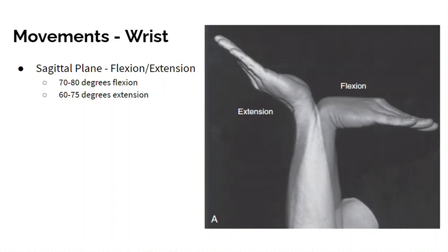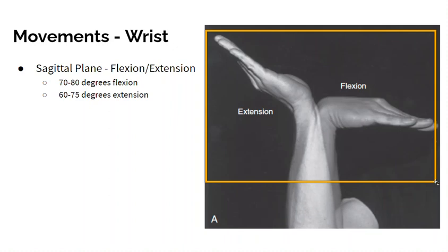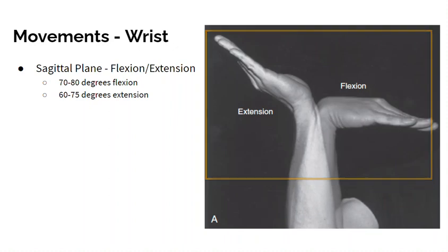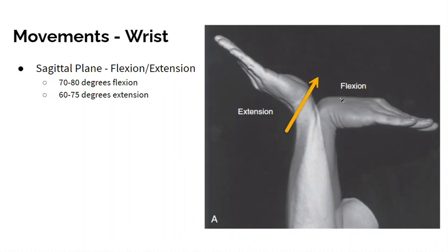A brief review of the movements of the wrist, carpometacarpal joint, and other joints of the wrist-hand complex using pictures of actual hands. First, we have the wrist joint in the sagittal plane about the medial-lateral axis, going through flexion and extension.